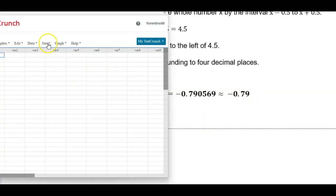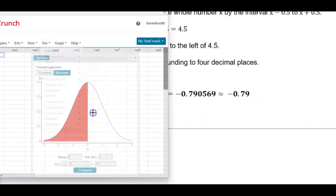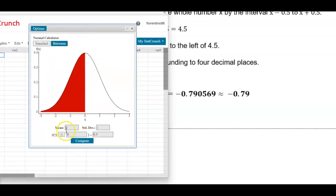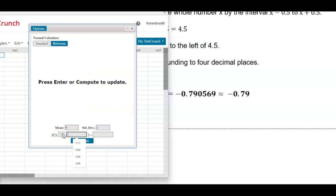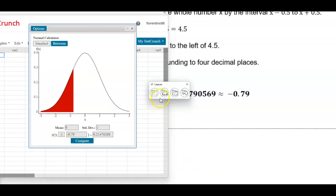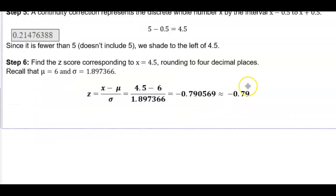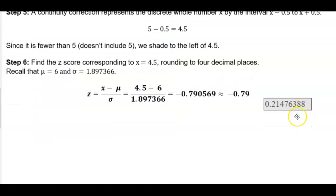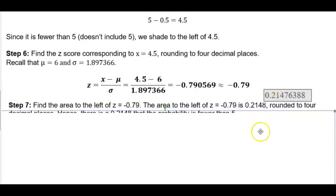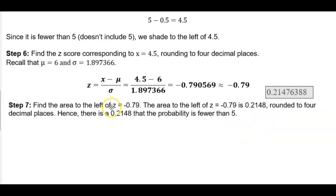Let's open up StatCrunch. Go to Stat, Calculators, then scroll down to Normal. Make sure the mean is 0 and the standard deviation is 1. Make sure the arrow is pointing to the left, because we want it to be less than or equal to negative 0.79. Then we compute the probability. Rounding to four decimal places, we get 0.2148. So finding the area to the left of that value gives us 0.2148. Hence, there is a 0.2148 probability that the result is fewer than 5.